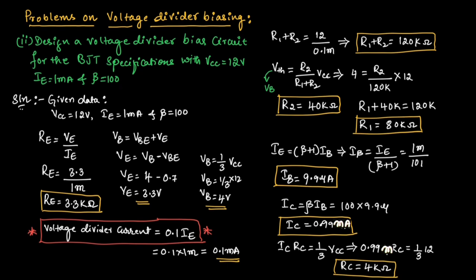We have found all the current components and resistor values. You need to draw the voltage divider bias circuit and substitute all these values in the circuit. This is about problems on voltage divider biasing. Hope you have understood the topic.